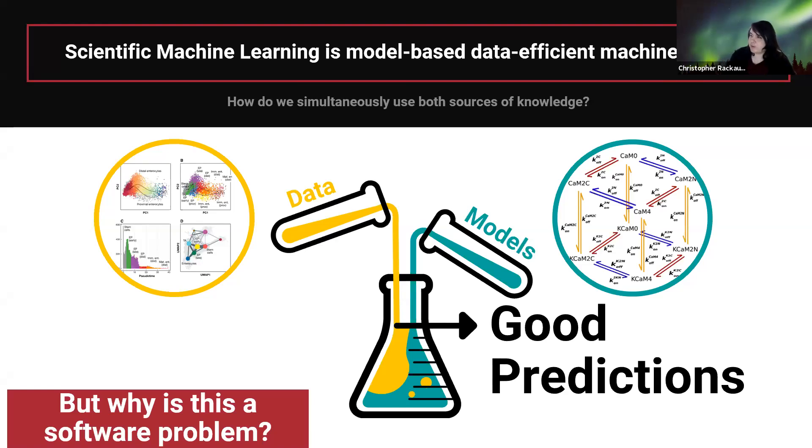What is scientific machine learning? It's model-based data-efficient machine learning. In a lot of scientific computing problems, you have a big partial differential equation. That is part of the problem. We have this physical knowledge that's given to us in the form of partial differential equations, but we also have a lot of data. Neural networks don't necessarily capture all the physics unless you have a whole lot of data.